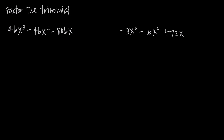In this video, we're talking about how to factor trinomials, but we're going to have to take out the greatest common factor before we can go ahead and factor the trinomial completely. So in this first example, we have 4bx cubed minus 4bx squared minus 80bx, and we want to factor this trinomial. But before we factor a trinomial, we always need to look for the greatest common factor, and in this case, we have one.